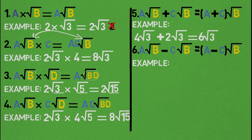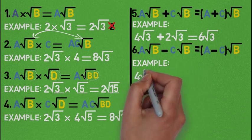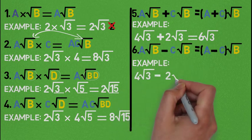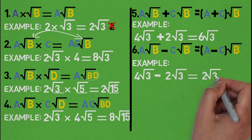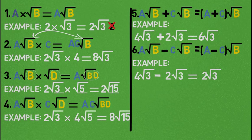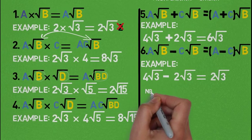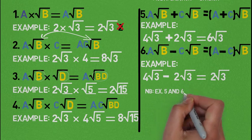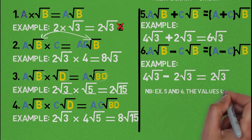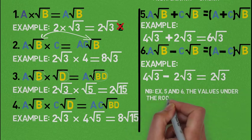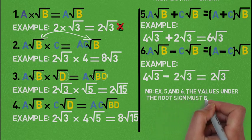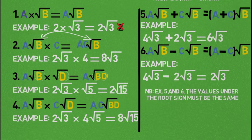An example for subtraction also shows the same. In adding and subtracting, you can think of it as 4 of the root 3s minus 2 of the root 3s, giving 2 of the root 3s. You have to note that for these operations, the numbers under the root sign should be the same before carrying out addition and subtraction. When they are not the same, you cannot carry out addition and subtraction of sets.